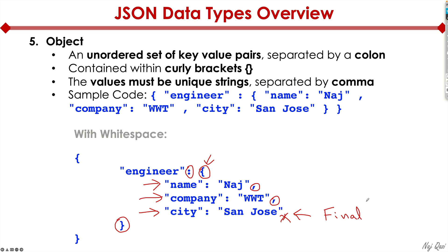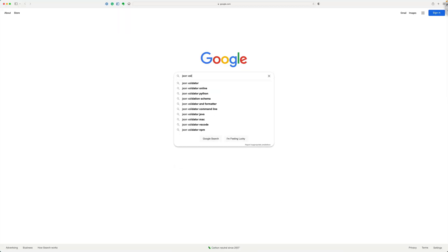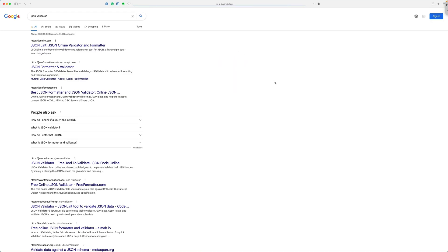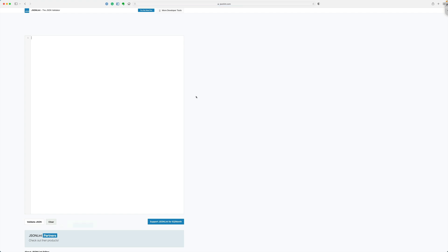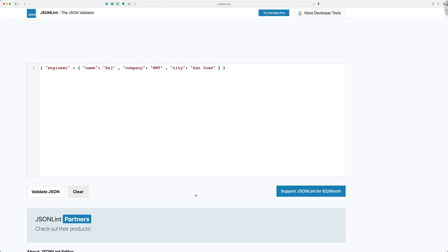And by the way, to verify your code that you wrote, ideally what you should do is go and Google the term JSON validator. And what that will do for you is help you validate the code that you wrote. As a matter of fact, let me show you what I'm talking about. I'm just going to go ahead and click on the first option that's available to me.